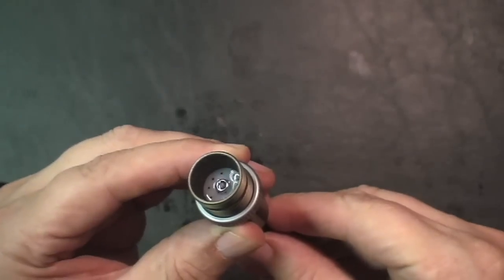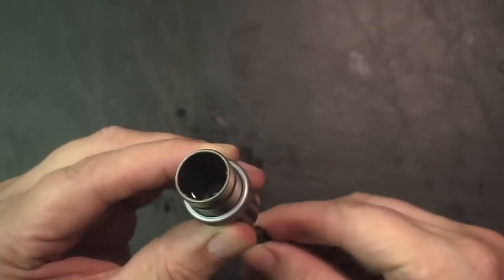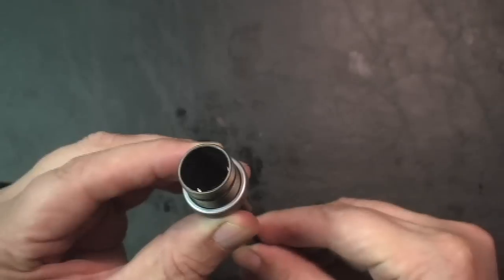With the piston at the bottom, fill the shock about 2 thirds full. Then move the piston up and down to bleed any air out from behind it.